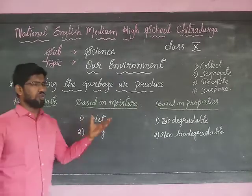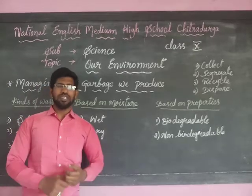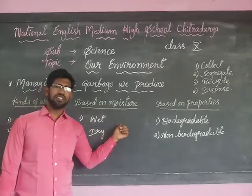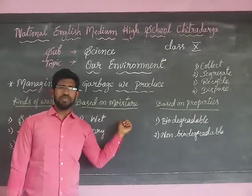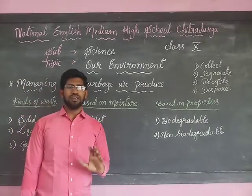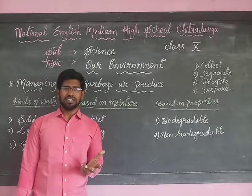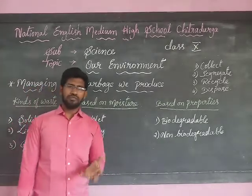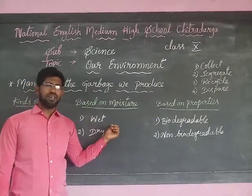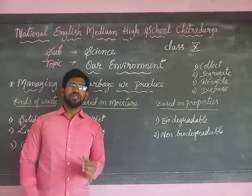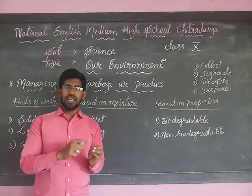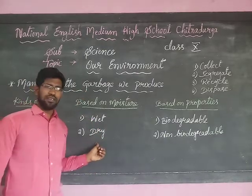Next, based on moisture, we can segregate the waste into wet garbage and dry garbage. Wet garbage means the waste produced in our kitchen — for example, rotten fruits and vegetables and leftover food items. These are considered wet garbage. Dry garbage means wrappers, bottles, pipes, plastic, and glass — these are all considered dry waste.